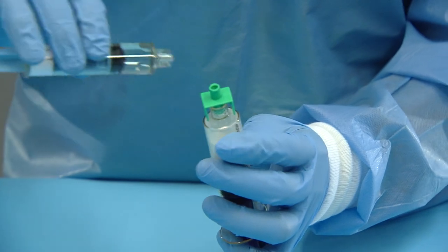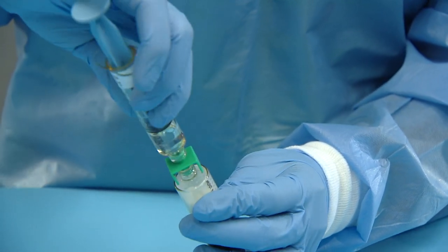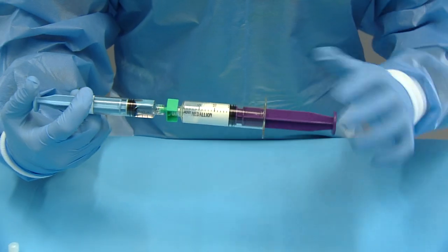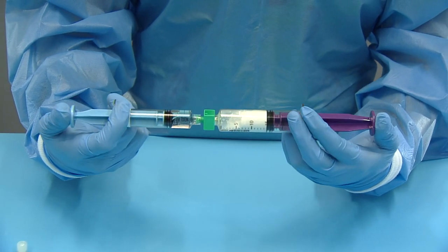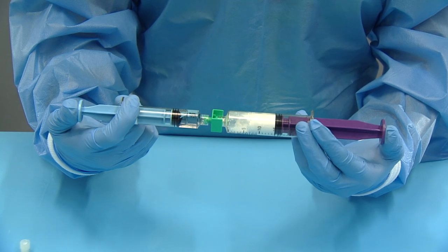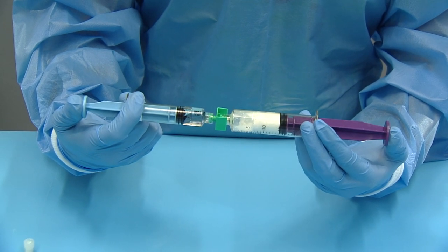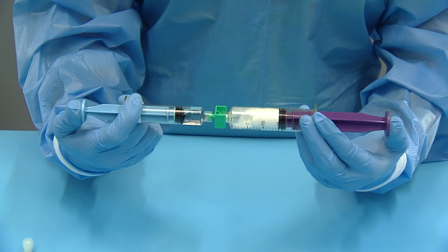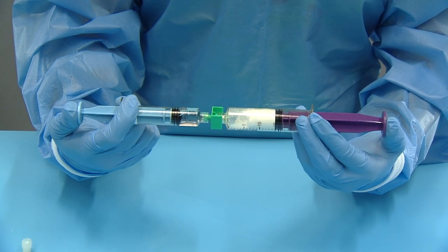Connect the syringes together using the lure lock connector. Hold the syringes vertically such that the saline is on top and rapidly inject the saline into the powder syringe. Hold the plunger down briefly to ensure that pressure does not push the saline back.